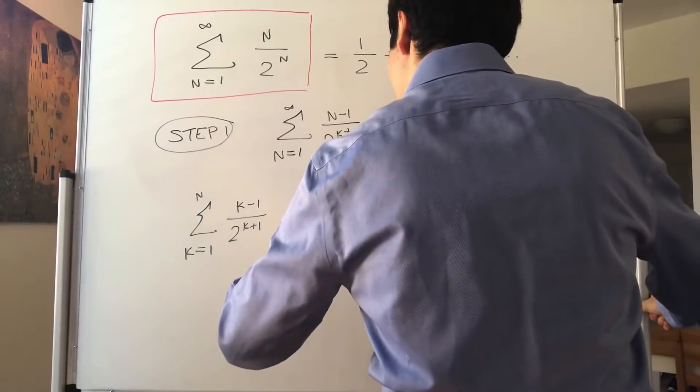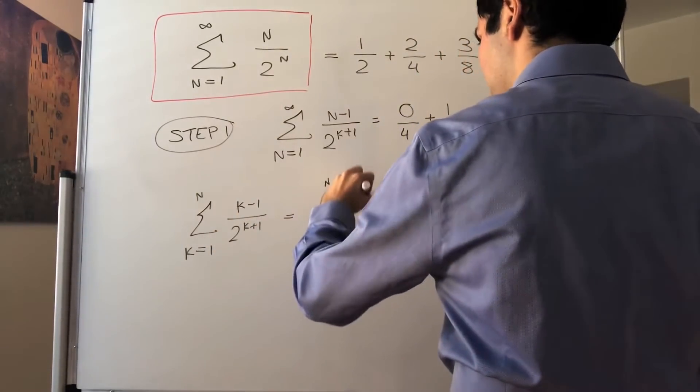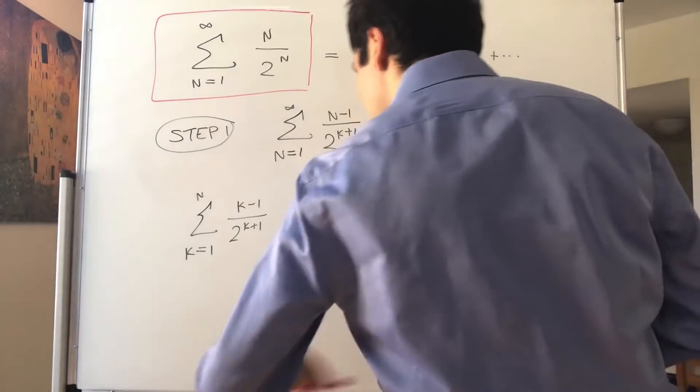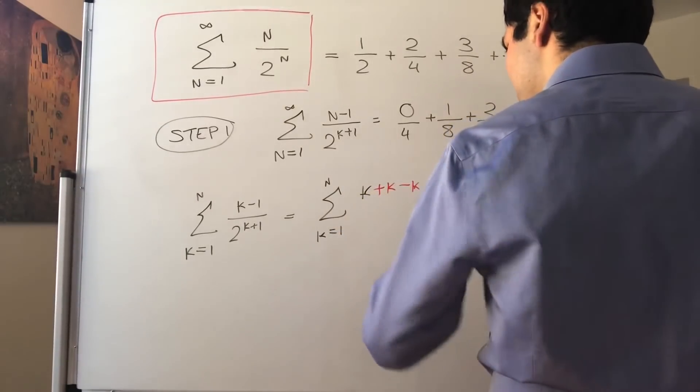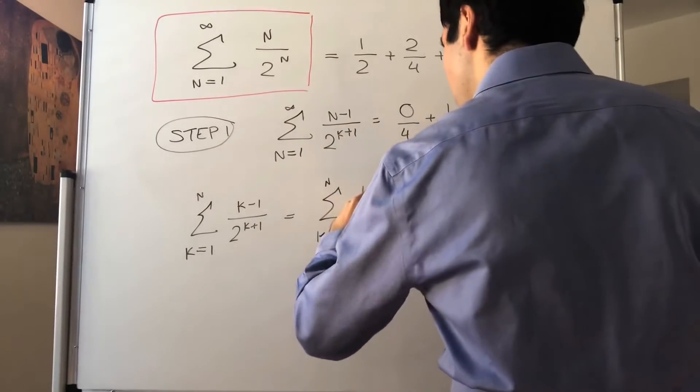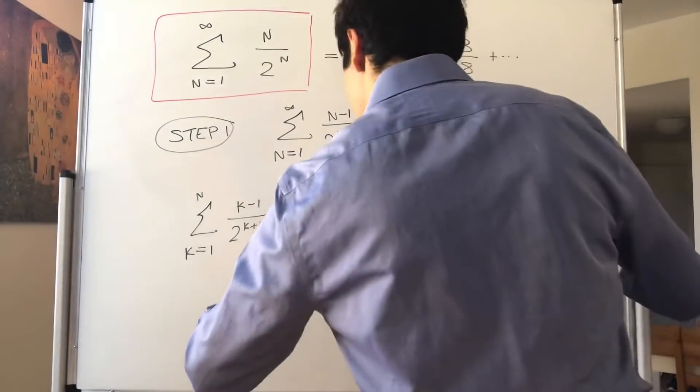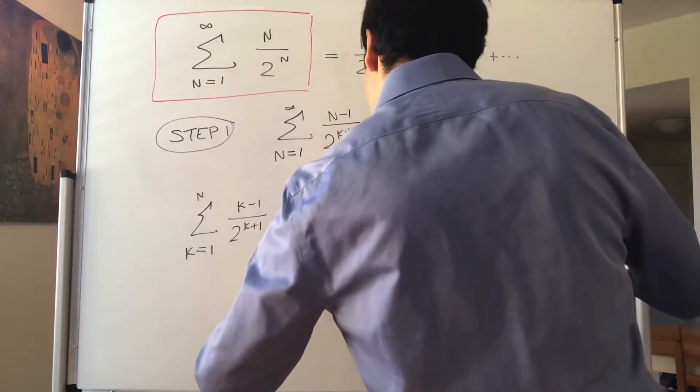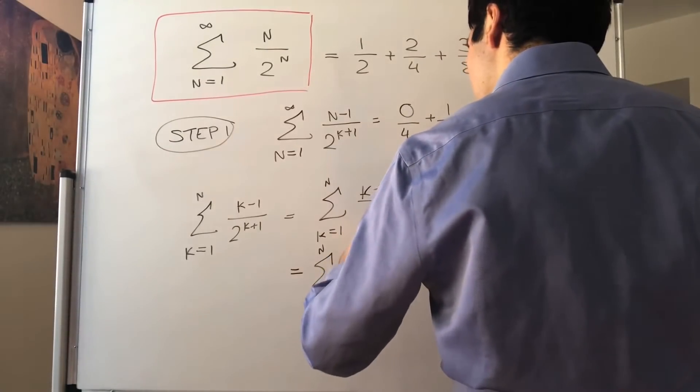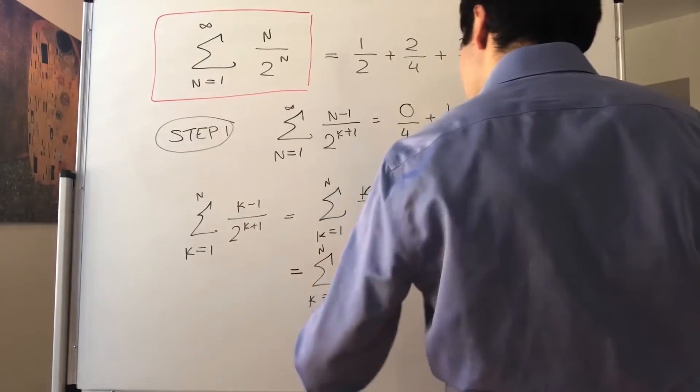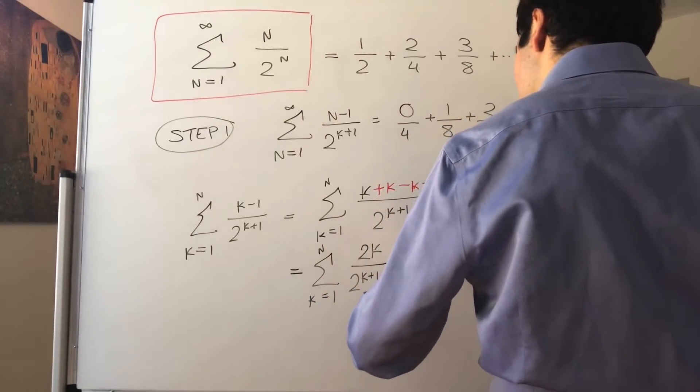Namely, let's add and subtract k from the numerator. So we do k plus k minus k minus 1 over 2 to the k plus 1. And that becomes the sum from k equals 1 to n of 2k over 2 to the k plus 1 minus, if you want, k plus 1 over 2 to the k plus 1.